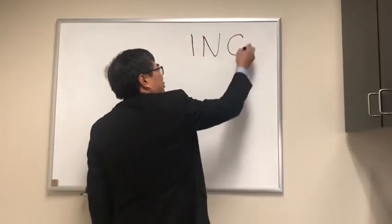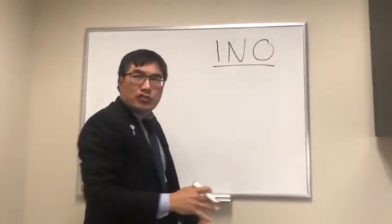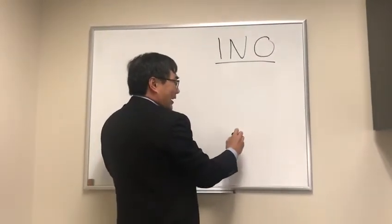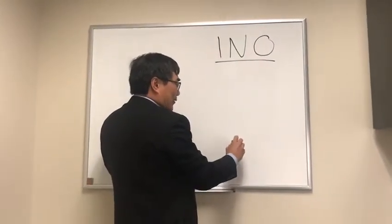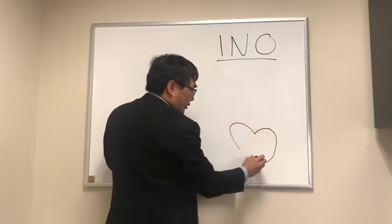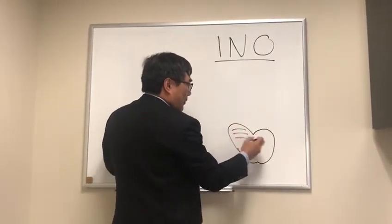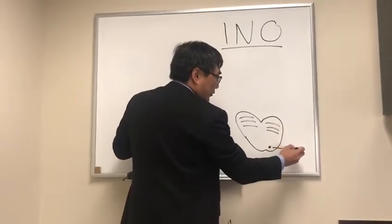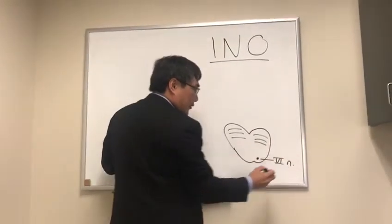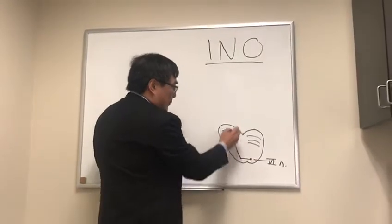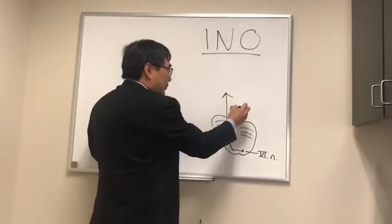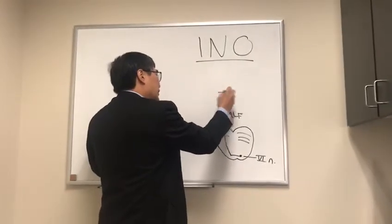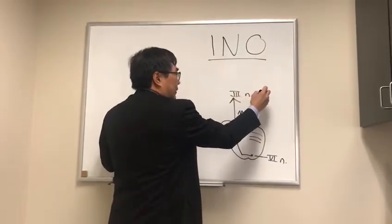We're going to be talking about internuclear ophthalmoplegia — you should watch the video on INO. To remind you what a regular INO is: it's an ophthalmoplegia that arises from the interneuron between the two nuclei — in this case the sixth nerve nucleus and the medial longitudinal fasciculus, which is traveling to the third nerve nucleus in the midbrain.